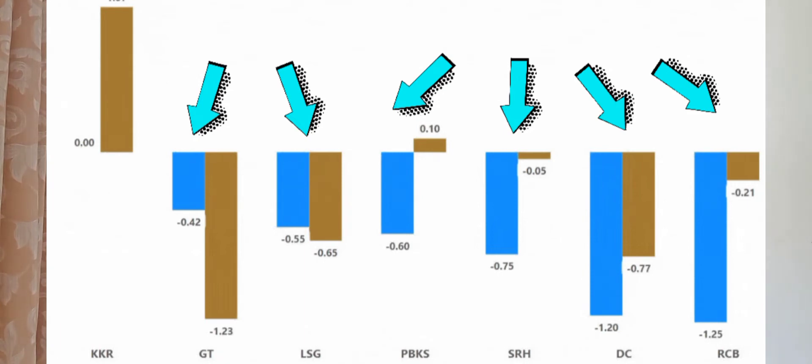But when you move to the 15 over mark, the gap is minimized. The gap is much smaller from the required rate, which means they are in control of their run chase and they are very close to where they want to be at that stage. For Lucknow Supergiants and Gujarat Titans, it's a very interesting pattern.